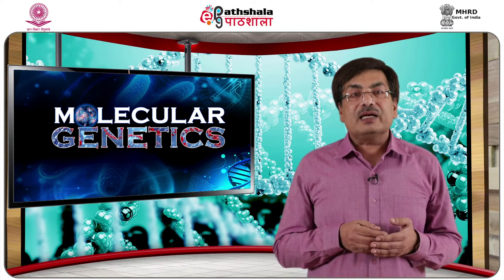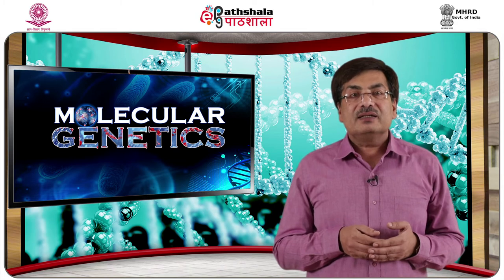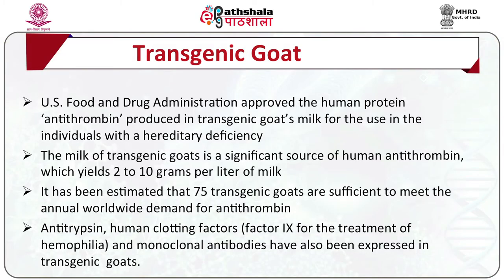Transgenic goats and sheep can also be raised to produce pharmaceuticals in their milk. The US Food and Drug Administration approved human protein antithrombin produced in transgenic goat's milk for use in individuals with hereditary deficiency of this protein. The milk of transgenic goats yields 2 to 10 grams of human antithrombin per liter of milk, and it is estimated that 75 transgenic goats are sufficient to meet the annual worldwide demand for antithrombin. Other human therapeutic proteins such as antitrypsin, human clotting Factor IX for treatment of hemophilia, and monoclonal antibodies have also been expressed in transgenic goats.